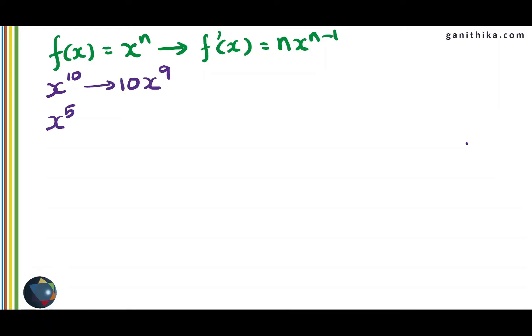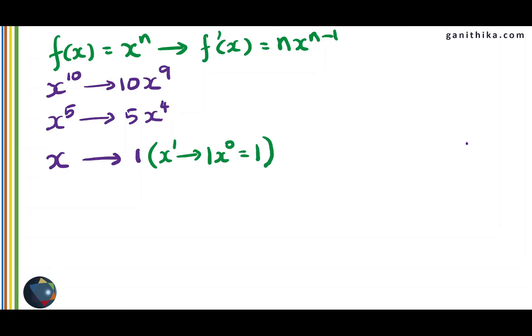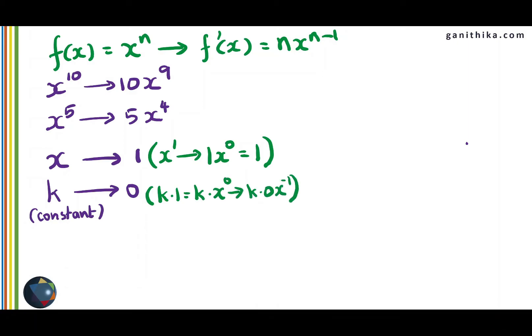We can use this to find derivatives of polynomials. For example, x^10 differentiates to 10x^9. x^5 differentiates to 5x^4. The derivative of x is 1, because x equals x^1 and applying the formula gives 1 times x^0, which equals 1. The derivative of a constant k is 0, because k can be written as k times x^0, and differentiating gives 0 times x^(-1), so the result is 0. The derivative of 1 over x is minus 1 over x squared, found by writing 1/x as x^(-1) and applying the formula.